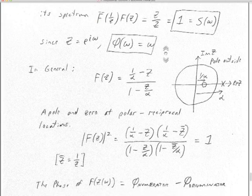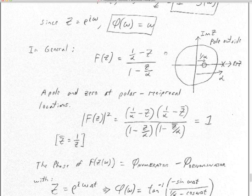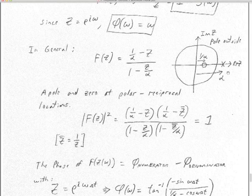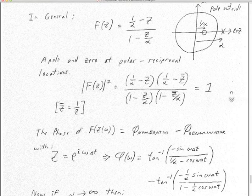Here is a general form for an all-pass filter: (1/α − z) in the numerator with (1 − z/α) in the denominator, where α > 1. So 1/α is the zero of the numerator, and α is the pole — the pole of the denominator. Since α > 1, the pole is outside the unit circle, so the filter is stable. You have a zero inside, so you wouldn't want to invert this all-pass filter, but you can use it as-is.